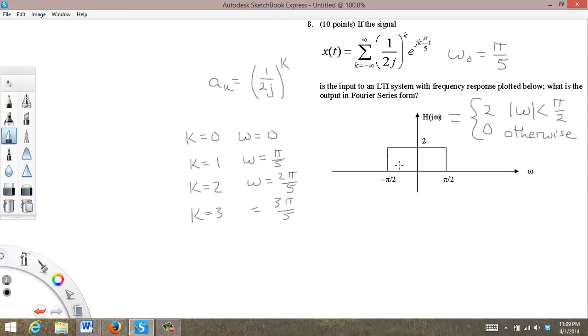So clearly 0 is in this range. Pi over 5 is in this range. In fact, 2 pi over 5 is also in this range. 3 pi over 5 is outside.